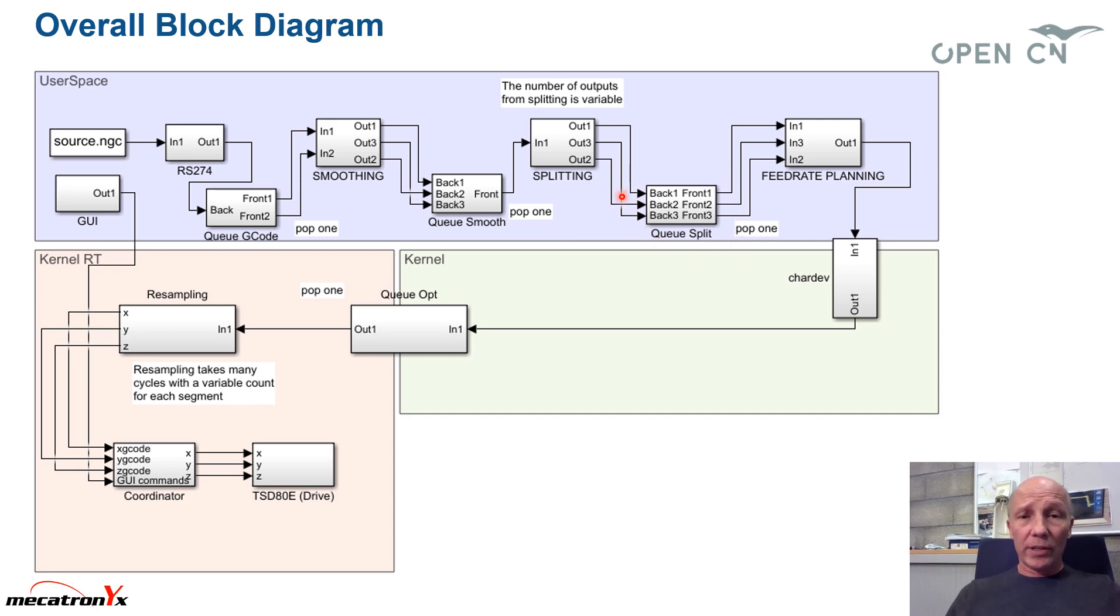So in this horizon, receding horizon queue, you have maybe three, four or five curve pieces, which are optimized simultaneously. This is called feed rate planning. And the output of the feed rate planning is the B spline, which represents Q as a function of U.